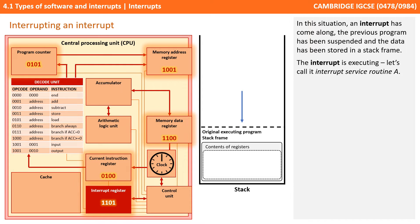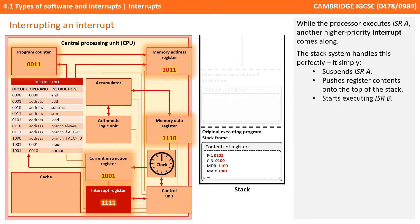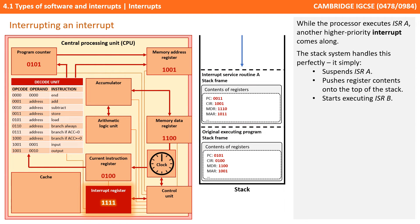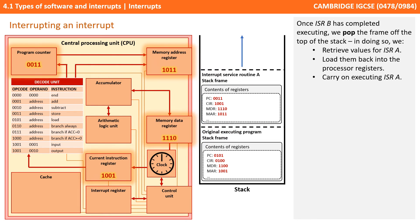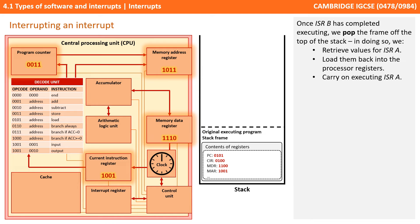We could also have an interrupt which has itself been interrupted. An interrupt comes along, so the previous program is suspended and its data is stored in a stack frame. The interrupt is now executing — let's call this interrupt service routine A. While the processor executes interrupt service routine A, another higher priority interrupt comes along. The stack data structure handles this perfectly: we simply suspend interrupt service routine A and push the register contents onto the top of the stack. We now start executing interrupt service routine B. Once interrupt service routine B has completed, we pop the frame from the top of the stack, retrieve the values for interrupt service routine A, load them back into the registers, and carry on executing it.